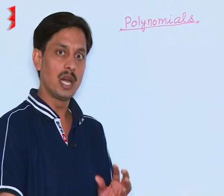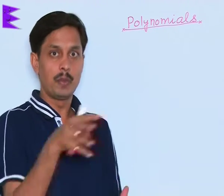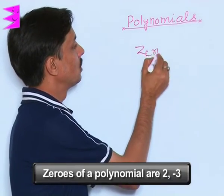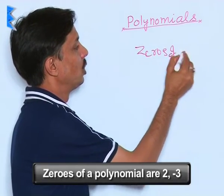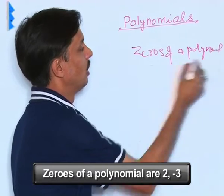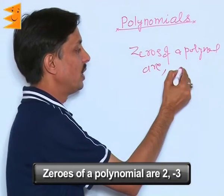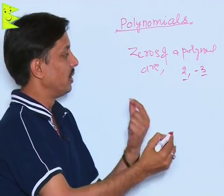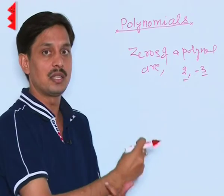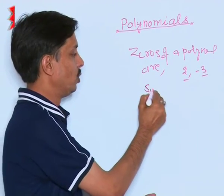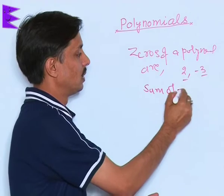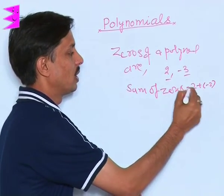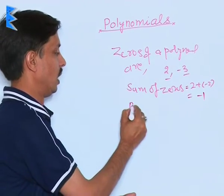Now, I want to tell you that how to obtain a quadratic polynomial if its zeros are given. Suppose, the zeros of a polynomial are suppose it is 2 and minus 3. How we will obtain that these 2 and minus 3 are the zeros of which polynomial? For that, you need to calculate first sum of zeros that is 2 plus of minus 3, answer comes out to be minus 1.